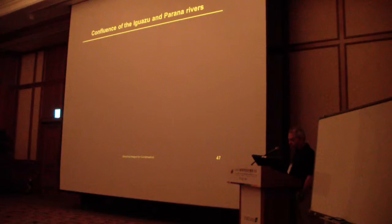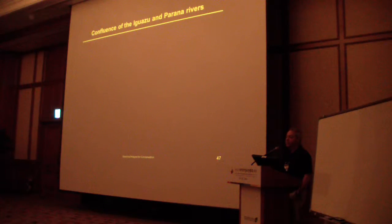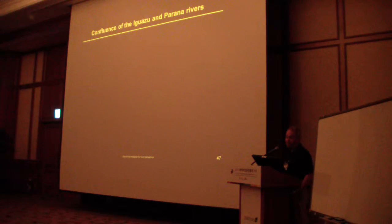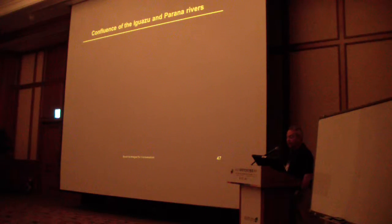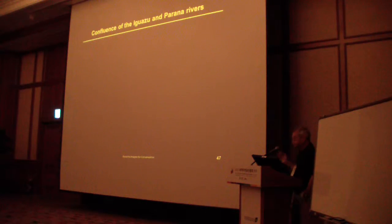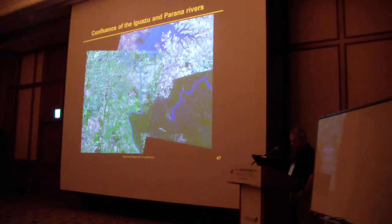This is a dramatic illustration of how national policy can shape the landscape. We can actually infer national policy from the images. Clearly, Brazil at some point decided the park was important — probably because of the tourist revenue it brings in — and decided to enforce the boundary and maintain the park.